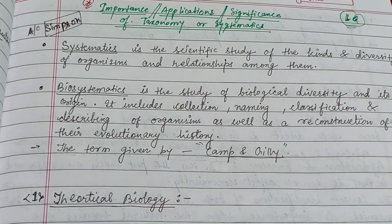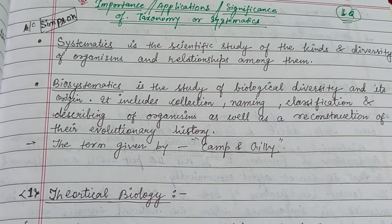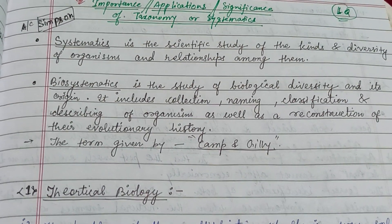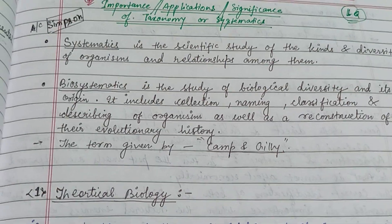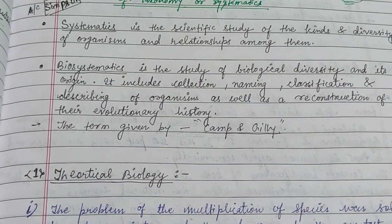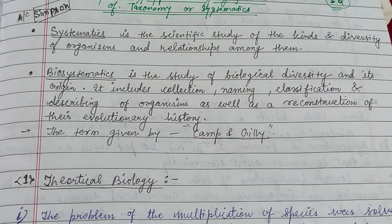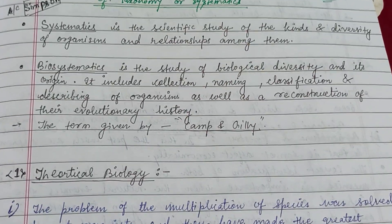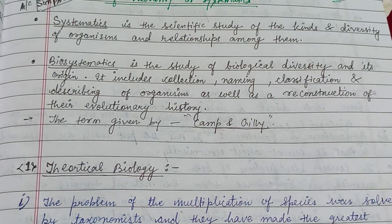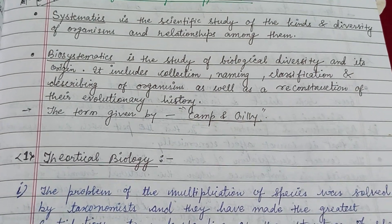Welcome friends. This video is about the importance or the application of taxonomy or systematics. According to Simpson, systematics is the scientific study of the kind and diversity of organisms and the relationships among them.